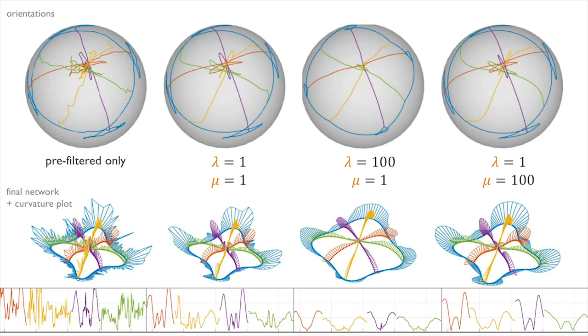The weights λ and μ explicitly control stretching and bending of the orientations, but implicitly also stretching and bending of the reconstructed curves.